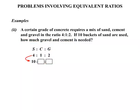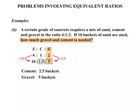Now we know that we've gone from 4 to 10, and that requires a multiplication by 2.5. So to get from 4 to 10 requires multiplying by 2.5. We're going to make sure we multiply the others by 2.5 as well. Firstly the 1: 1 times 2.5 is simply 2.5. Then the 2: we times that by 2.5 and we get 5. So to answer the question, how much gravel and cement is needed? Well, the cement we can see there is 2.5 buckets, and for the gravel we can see that there are 5 buckets required.